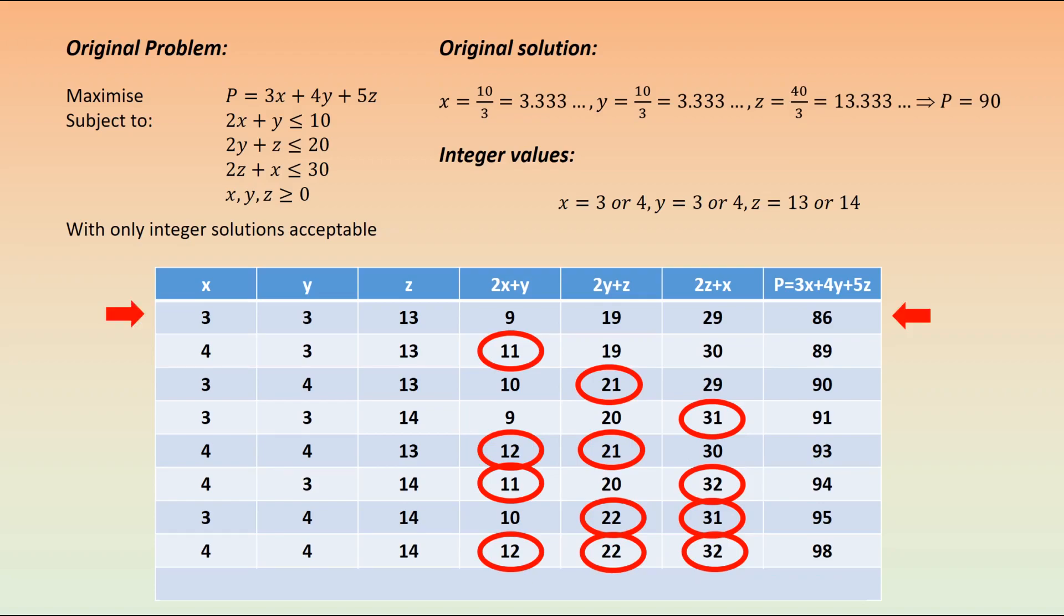Now, you do need to be very careful when checking integer values. Although for the original solution we have checked the values either side of the decimal answer—3.3 gave us 3 or 4 for x, and so on—this does not necessarily always lead to an optimal value. We have to be a little bit more careful than that and check values all around the original solution. Of course, there are many permutations of other numbers that we could try: x is 2 or 5, y is 2 or 5, z is 12 or 15. Different combinations may yield a better answer. Of course, this may take quite a while.